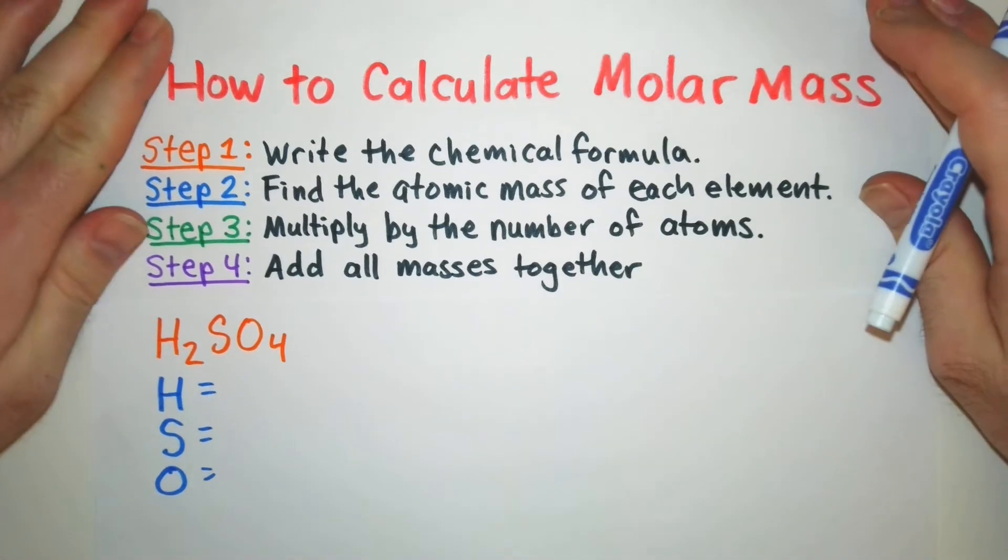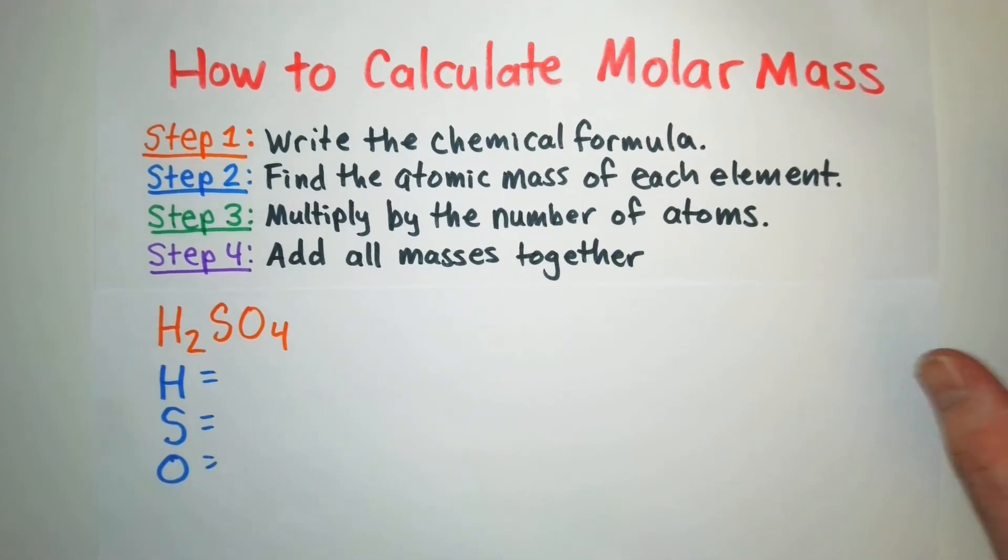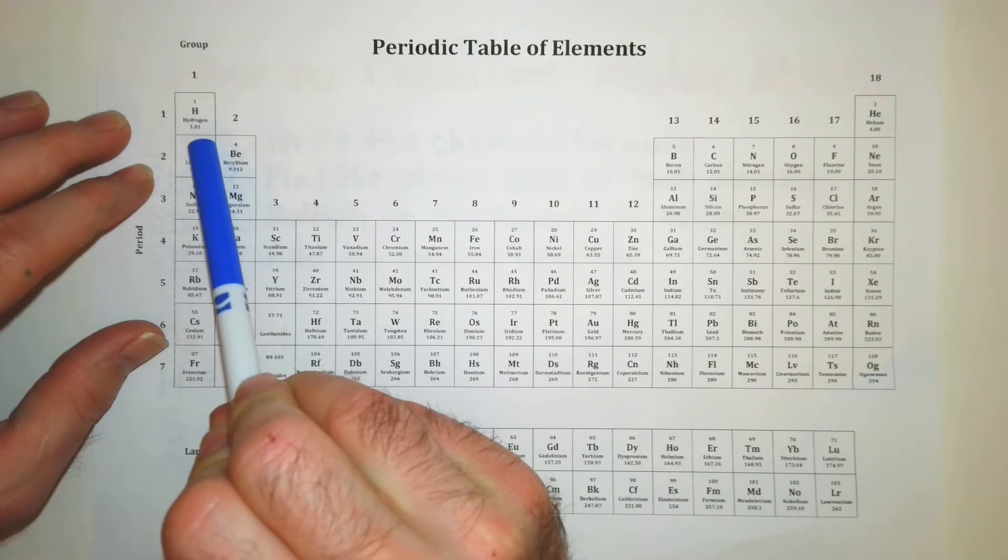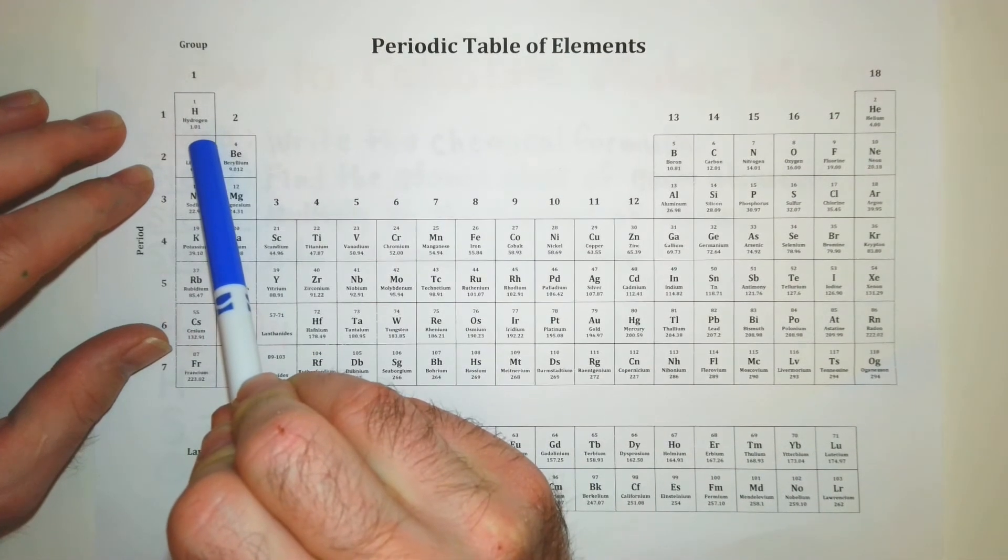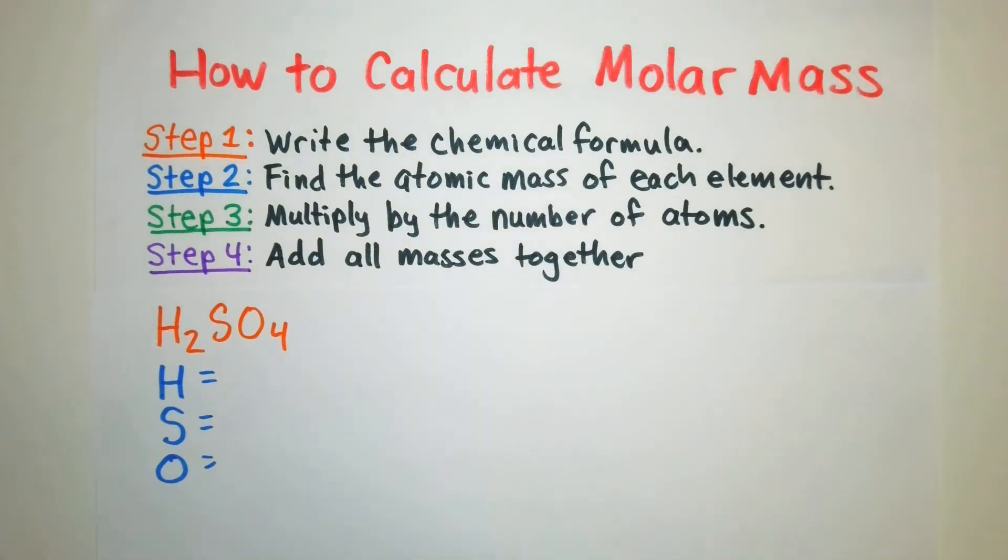All right let's kind of move this up a little bit. For our hydrogen, hydrogen right here we have an atomic mass of 1.01 and that is grams per mole.